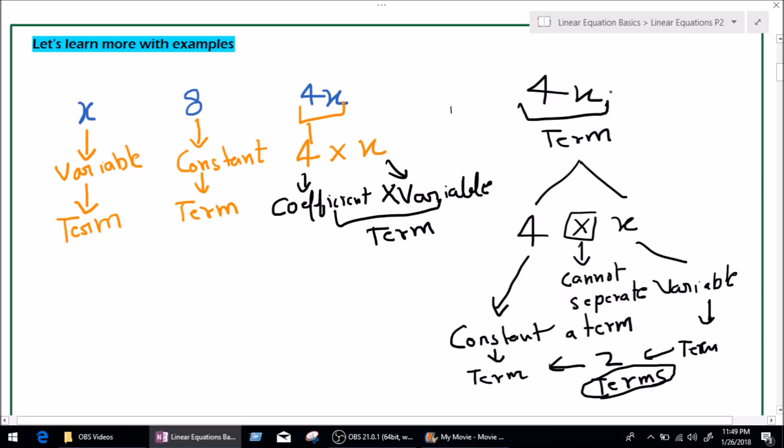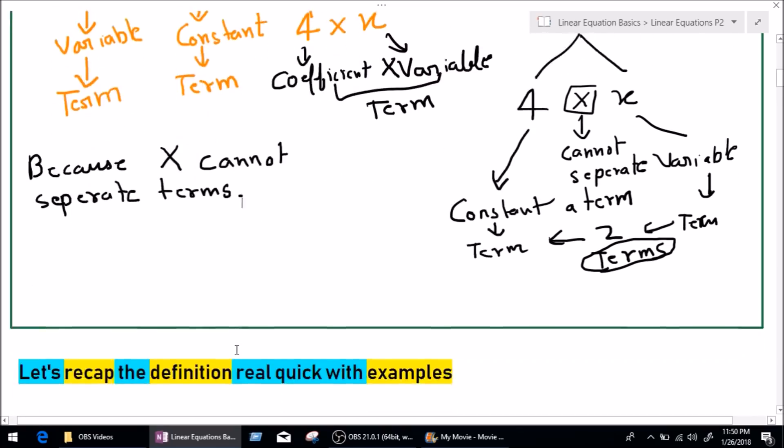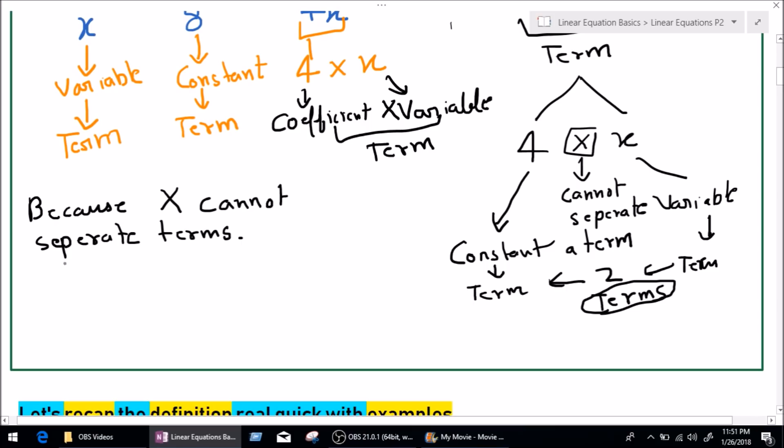But, as a matter of fact, 4x is only one term. So, as we saw, multiplication cannot separate terms. That's why 4x is one term, not two.